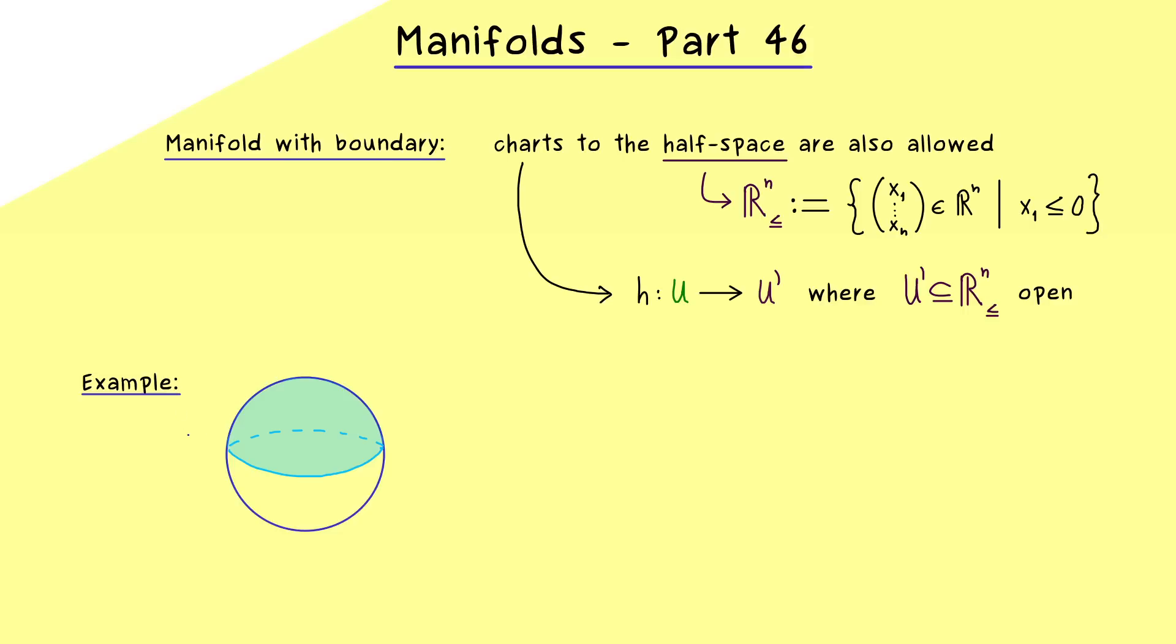For example, we can just take our sphere S^2, but only look at the northern hemisphere. So you could say, we cut the whole thing at the equator and what we get is just half a sphere and let's call it the northern hemisphere.